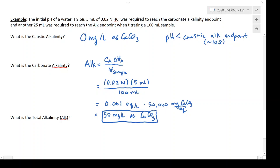So we use the same alkalinity equation that we would use for total alkalinity. What's different is that the volume required is the volume to get to the carbonate alkalinity endpoint.